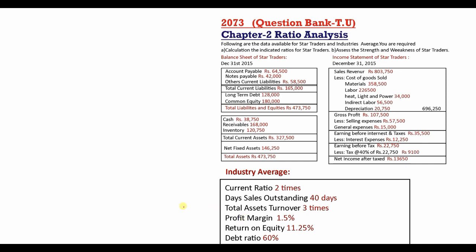We will give the industry averages: current ratio 2 times, day sales outstanding 40 days, total asset turnover ratio 3 times, profit margin 1.5%, return on equity (ROE) 12.5%, and debt ratio 60%.